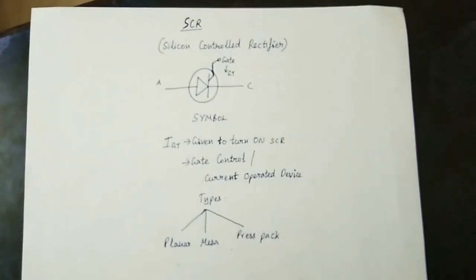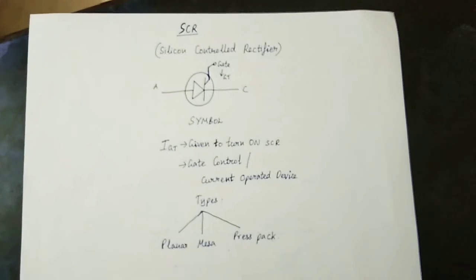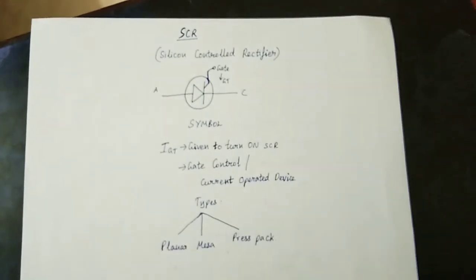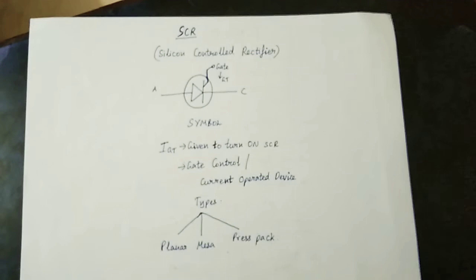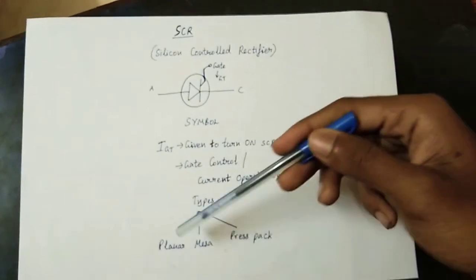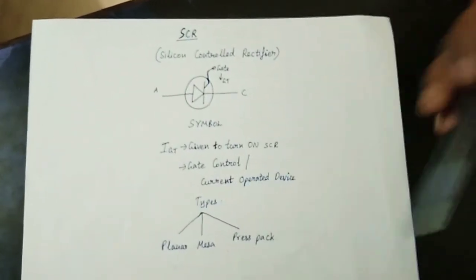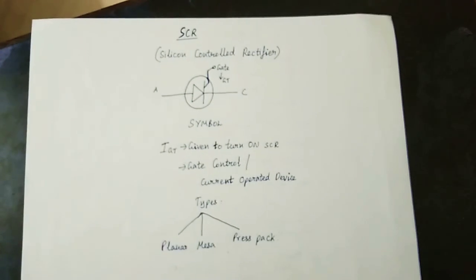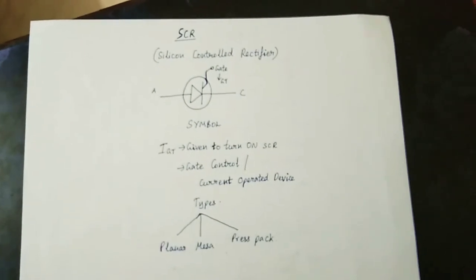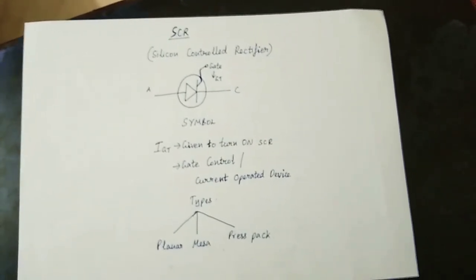There are three types of SCR based on construction: planar, mesa, and other types. Based on construction, you can see the main characteristics of how it works.